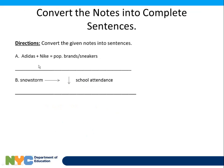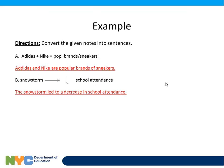Now you try it — what does this mean? Press pause if you don't want to know and figure it out yourself. Adidas and Nike are popular brands of sneakers. A snowstorm leads to a decrease in school attendance. Have fun taking notes. Deuces.